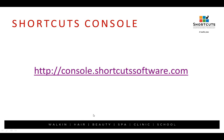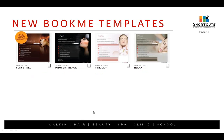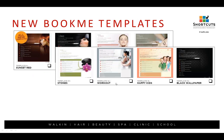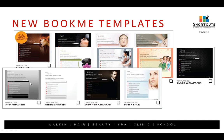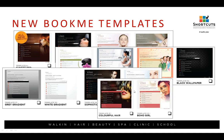Some of the newer themes you can choose from include Sunset Red, Midnight Black, Pink Lily, Relax, Stones, Workout, Happy Kids for kids' salons, Black Wallpaper, Gray Gradient and White Gradient — which is really nice if the other ones aren't working for you. We also have Sophisticated Man, Fresh Face, Colorful Hair, and Boho Girl. So you have all of these to choose from.